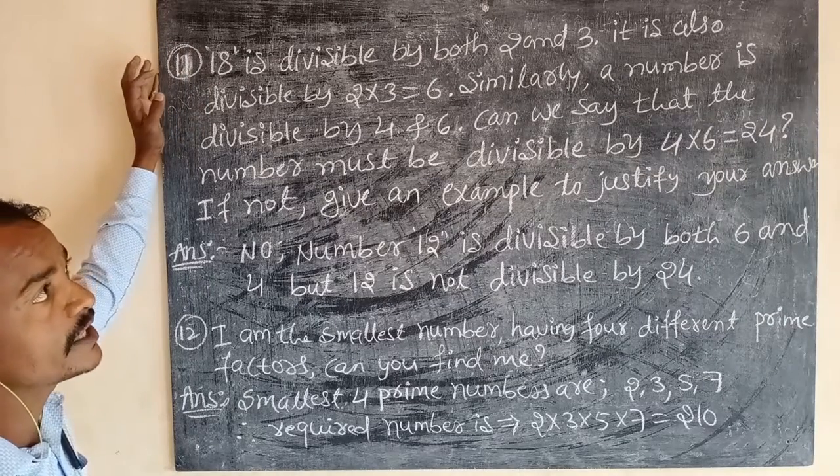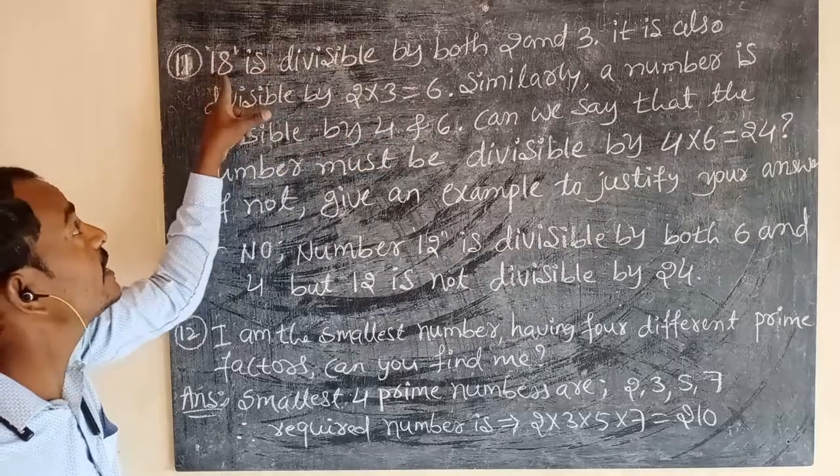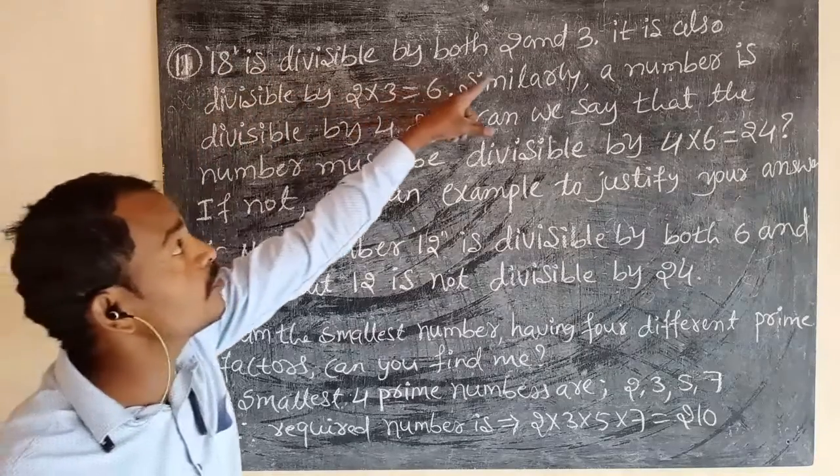18 is divisible by both 2 and 3. It is also divisible by 2 and 3. So, 18 is divisible by both 2 and 3.